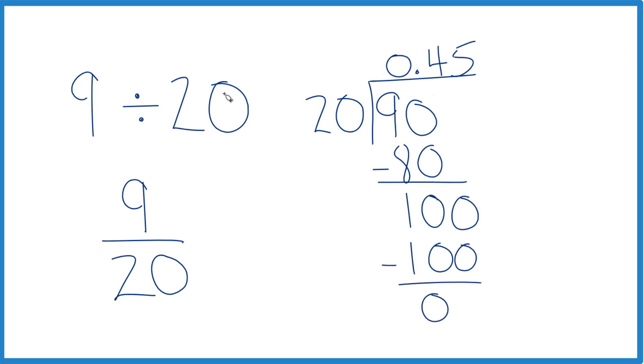So 9 divided by 20, or 9 over 20, that equals 0.45. That's how you do it. Or you get a calculator out and divide 9 by 20. That works too.